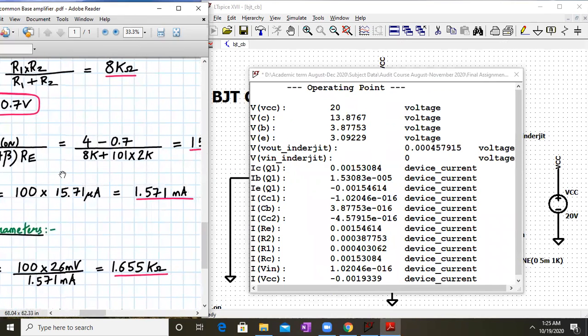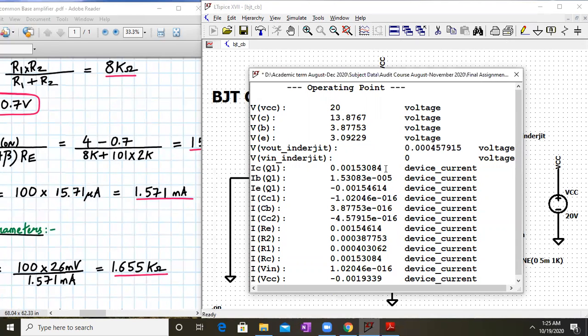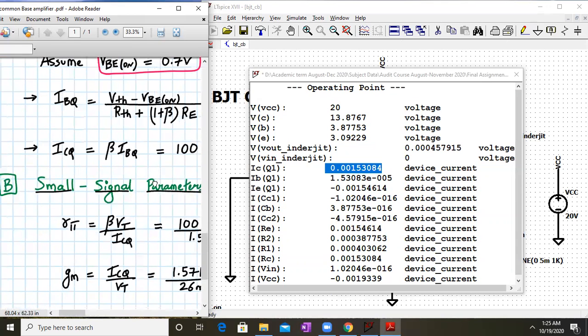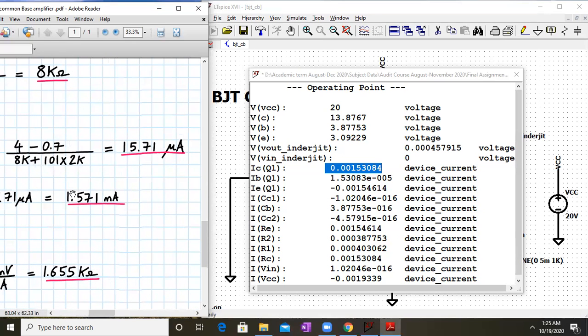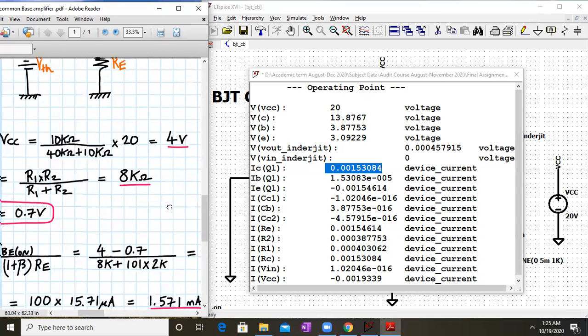Now let's check the DC conditions. Value of ICQ should come out to be 1.57 and we are getting 1.53. That's absolutely fine. VB is 3.87 minus 3.09, which is close to 0.7 volts. And the value of IBQ is 15.3 micro amperes and theoretically we are getting 15.71. So all the values are matching quite well.